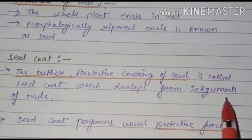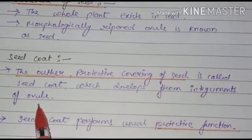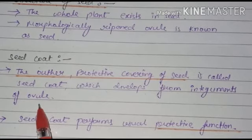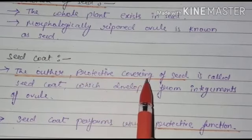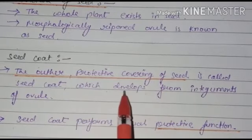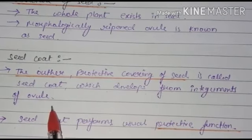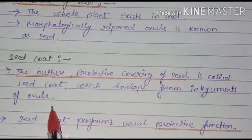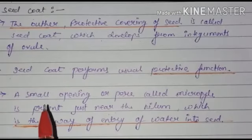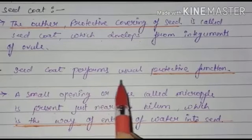The seed coat is developed from the integuments of the ovule. You know the structure of the ovary — the integuments present in the ovary later develop into the seed coat. So the definition is: the outer protective covering of the seed is called the seed coat, and it is developed from the integuments of the ovule.